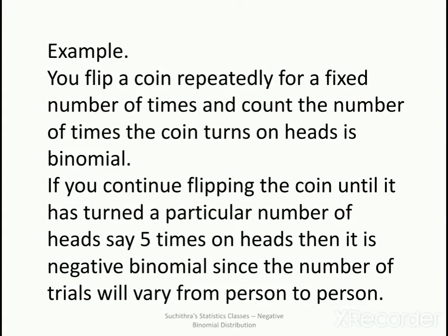Here is an example differentiating a binomial experiment from a negative binomial experiment. If you flip a coin repeatedly for a fixed number of times and count the number of heads, that is binomial — we have a fixed number of trials. If you continue flipping the coin until it has turned up heads a particular number of times, say five, then it is negative binomial, since the number of trials will vary.